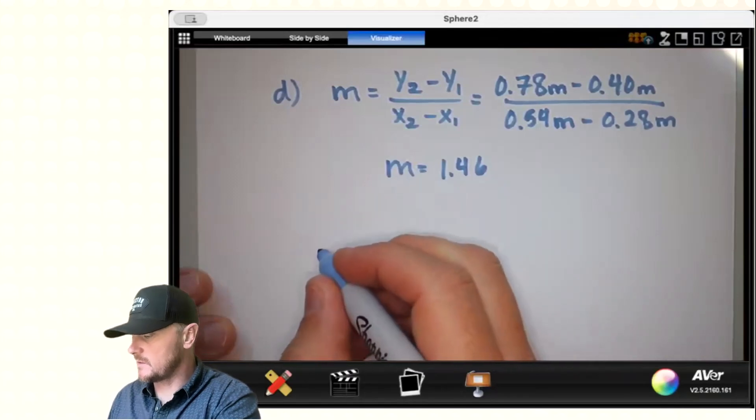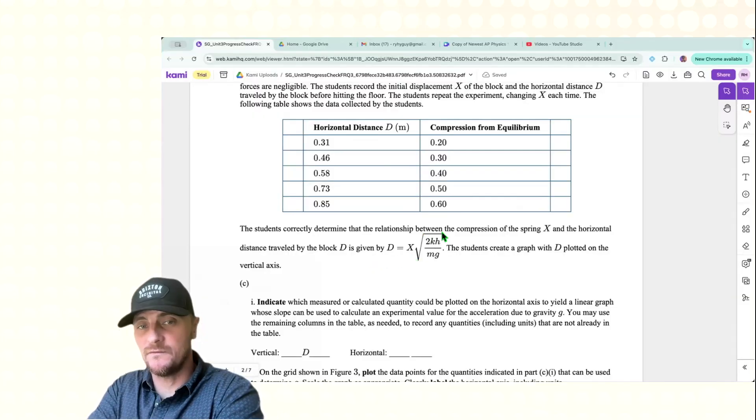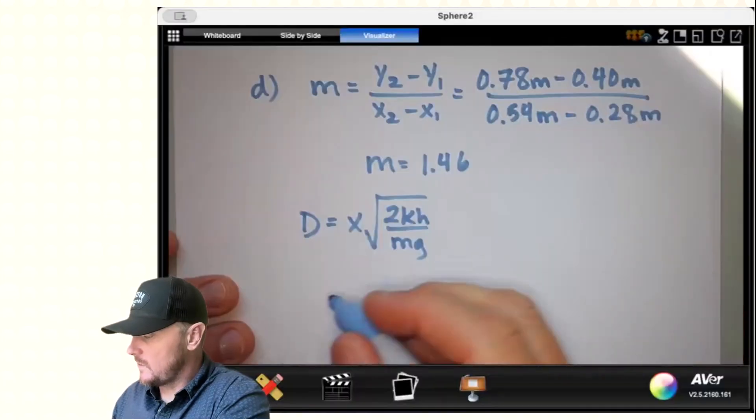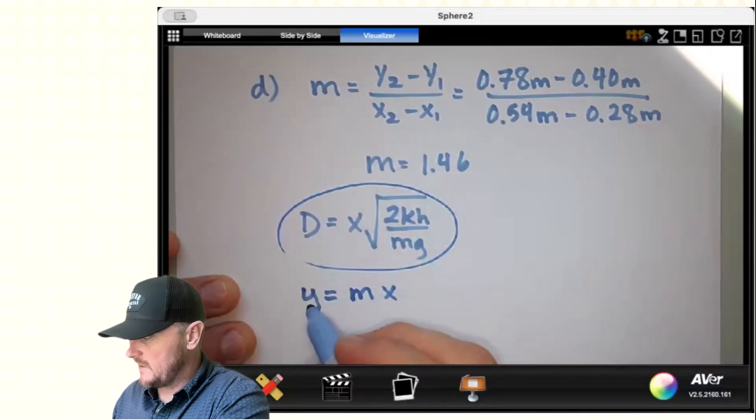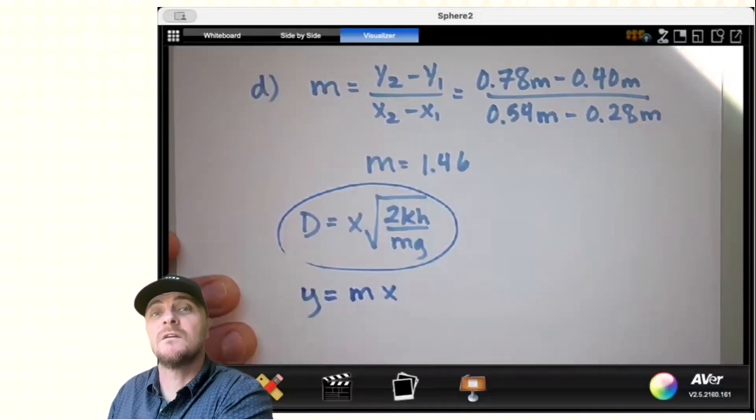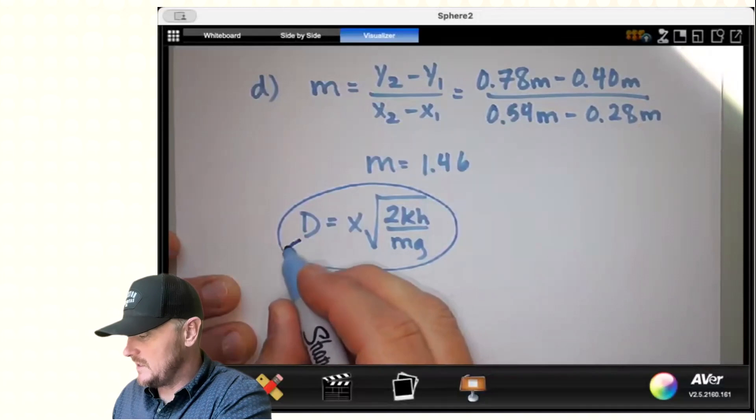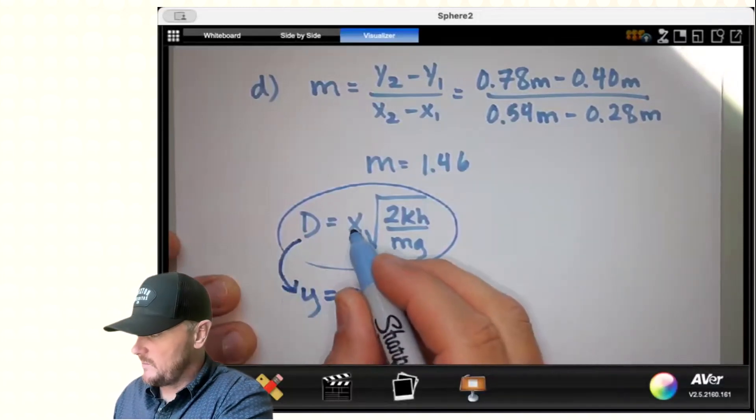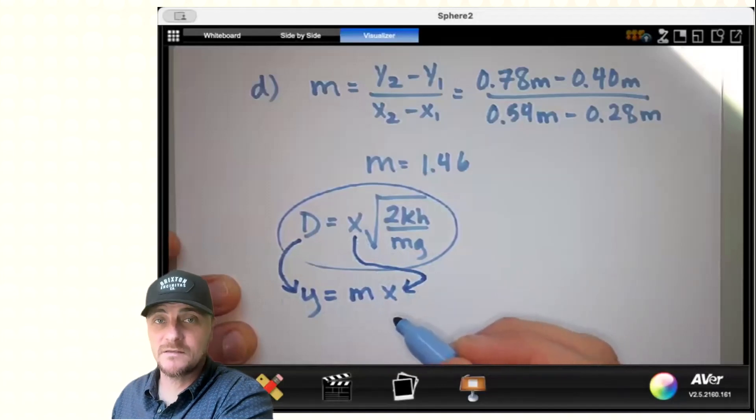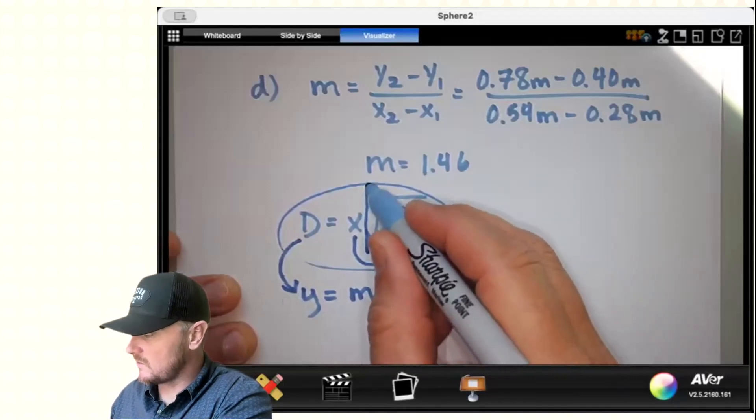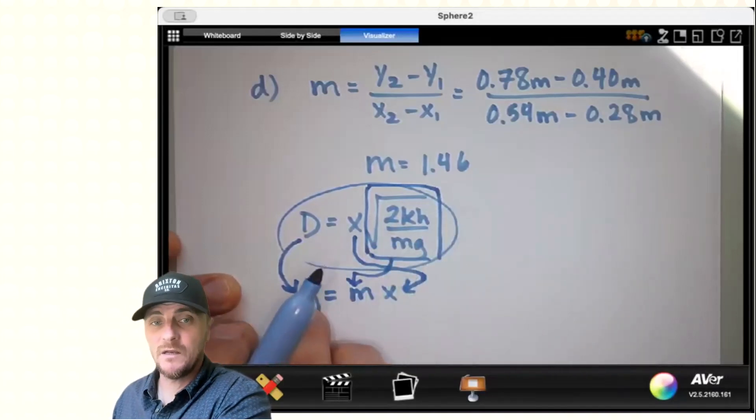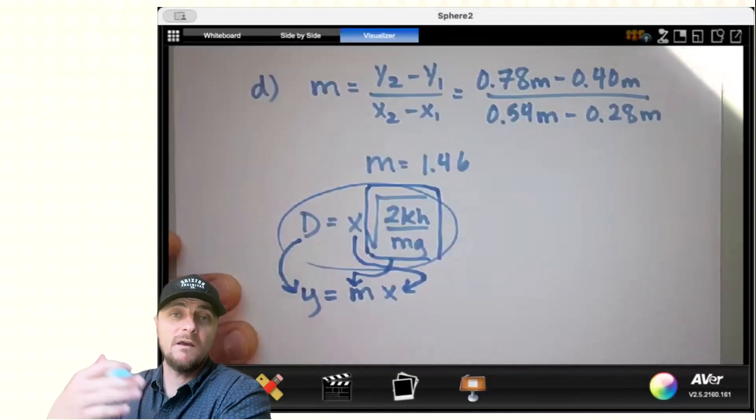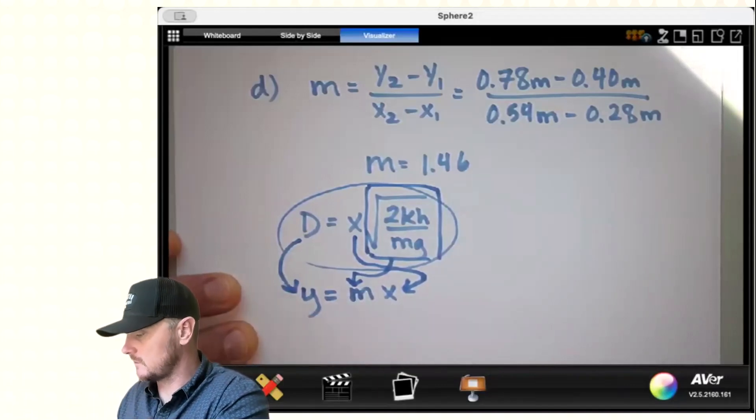Notice there's no unit because it would be meters over meters. So it's a ratio. So how are we going to use this answer to help us find G? We have to return to the student's equation. All right, here's their equation, D equals x times the square root of 2kH over mg. Now there's two ways to look at this. I want you to remember the general equation for a line is y equals mx. Can I get this thing to fit into each of these slots without doing too much work? The answer is yes.